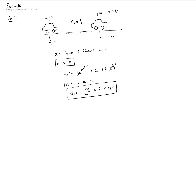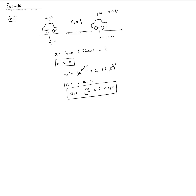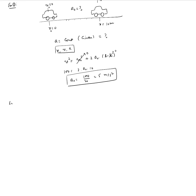Keep in mind this is only valid if the acceleration is uniform or constant — only then can we apply Galileo's equations. Here is another example: the same car traveling along a straight-line path, again modeled as a particle.